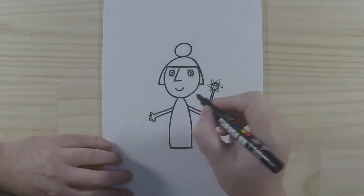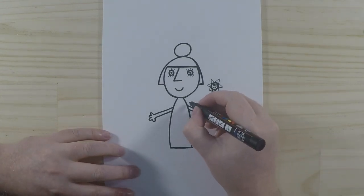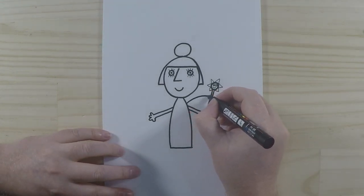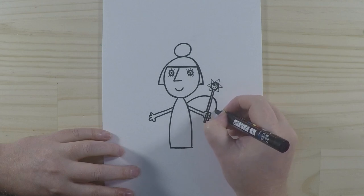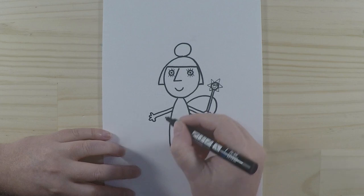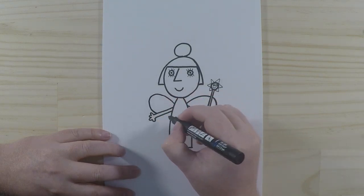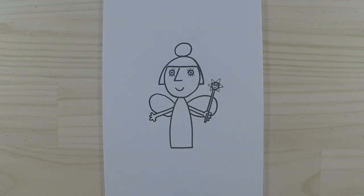And the next part we'll draw is her wings—she's a fairy, of course, so she's got wings. That sits all behind her arms and her magic wand, so it goes around like this. And we'll do the same on the other side as well, just like that.